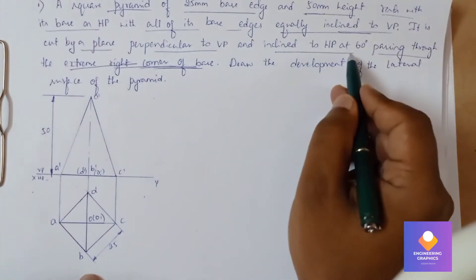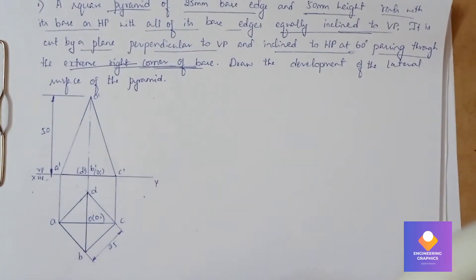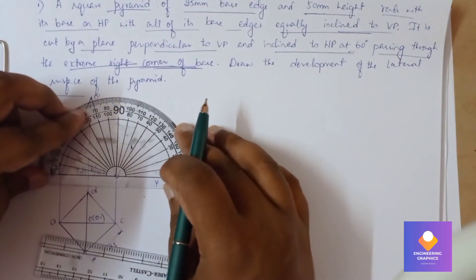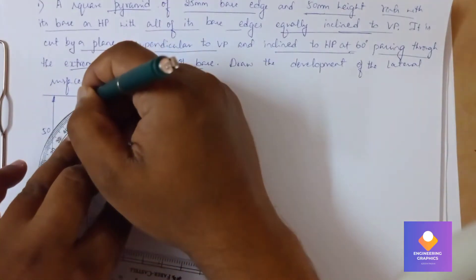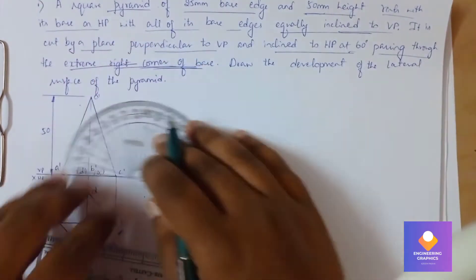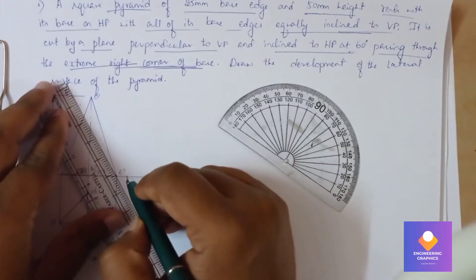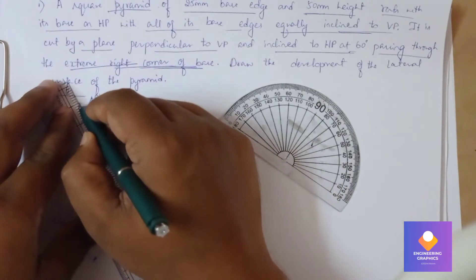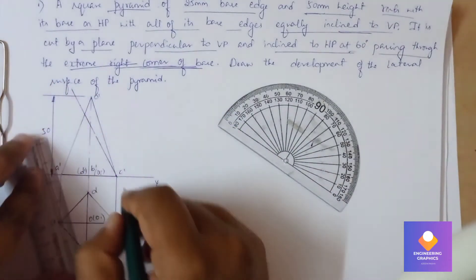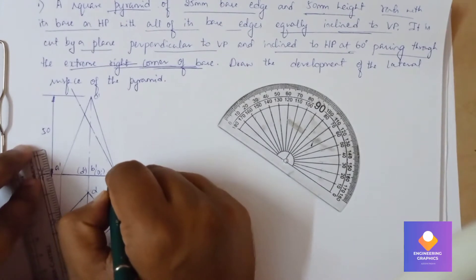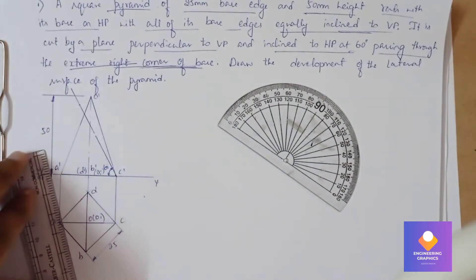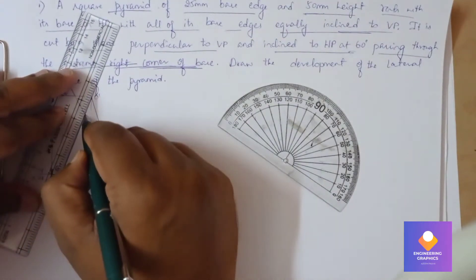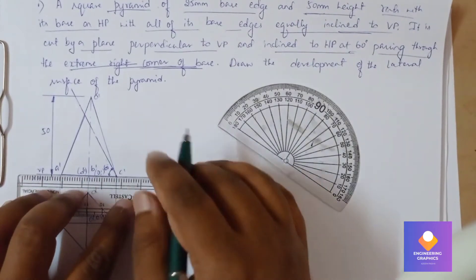Now we have to mark the section plane. The extreme right corner — that is point C — is the reference, and from this point we need to mark an angle of 60 degrees. Take the protractor, mark 60 degrees from C-dash, and draw the section plane passing through this point.